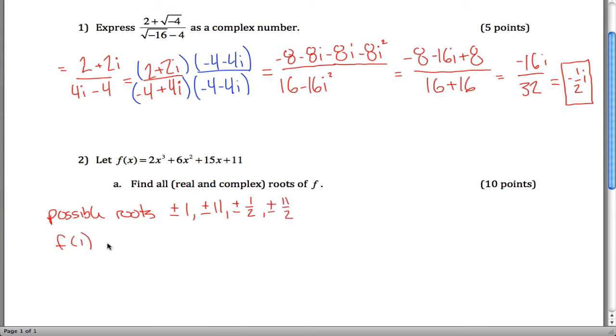F of 1, that's not going to be 0 because all these things are positive. Maybe F of negative 1 will work. See, this would be negative 2. And this would be plus 6. And this would be minus 15. And this would be plus 11. And what do we get? 17 and negative 17. Sure enough, that's 0.